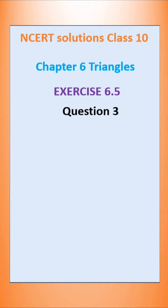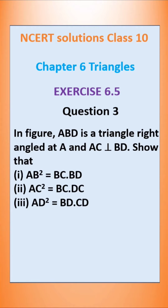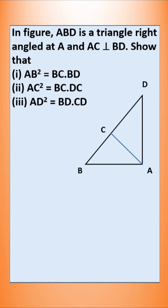In this video, let us solve question number 3 of exercise 6.5. The question is: in the figure, ABD is a triangle right-angled at A and AC is perpendicular to BD. There are 3 problems to solve. This is the figure they have given and we have to prove these 3 things. ABD is a triangle right-angled at A.